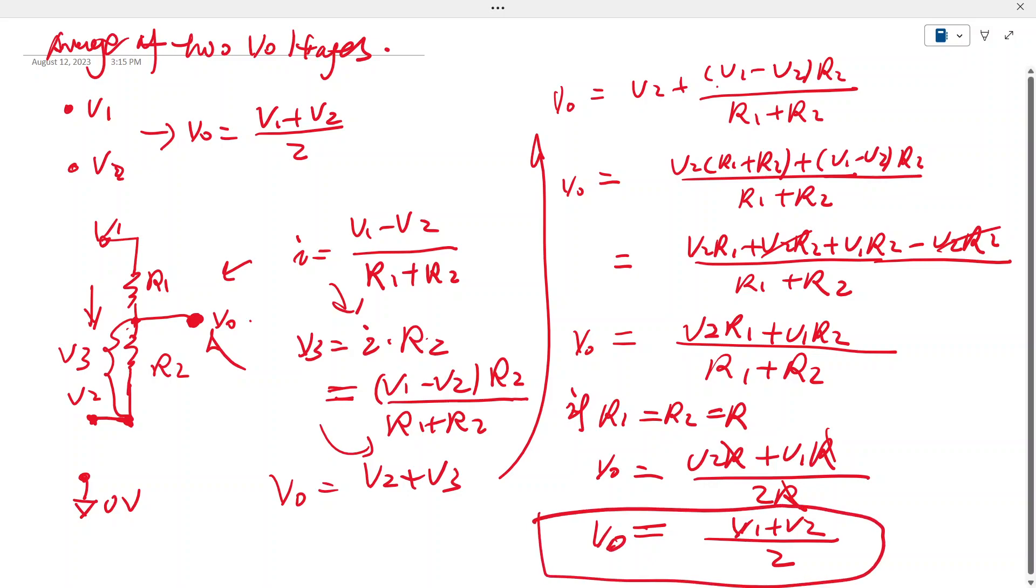That means if we have two resistors, R1, R2 equal values, the middle point is the average. If R1 equals R2 equals R, and we call this Vout, it's halfway, the average of V1 and V2.